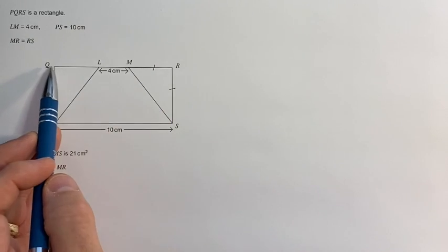So here we have a rectangle, which implies, because a rectangle has parallel sides, that this shape within, the PLMS, must be a trapezium.